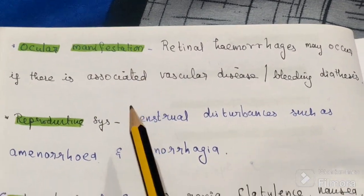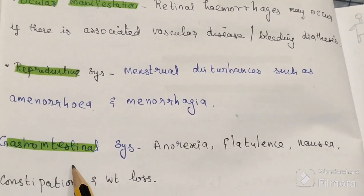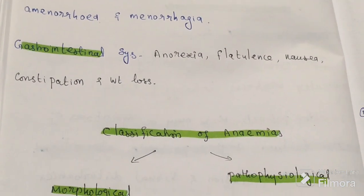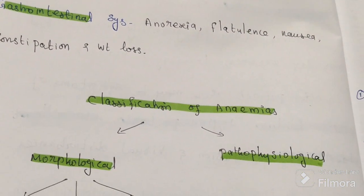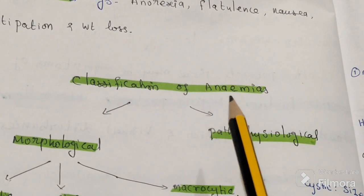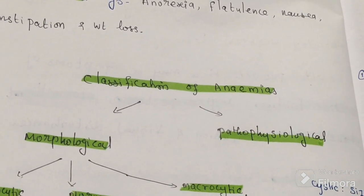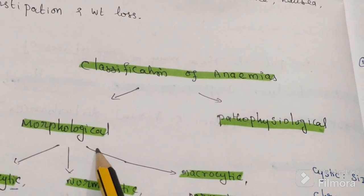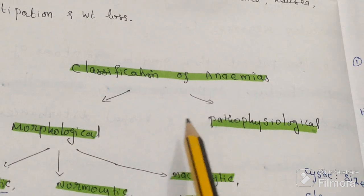Anemia affects the ocular region, the reproductive system, and the gastrointestinal system. Now we will discuss the main classification of anemias. Anemia can be classified by two ways: one is morphological, which has three types; and the other is pathophysiological, which has multiple types. Morphologically, based on their size and color, we classify it into microcytic or hypochromic.